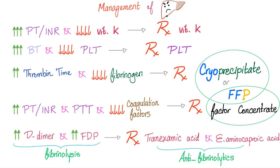How do we manage liver disease? If PT-INR is prolonged and vitamin K is low, give vitamin K. If bleeding time is prolonged and platelet count is low, give platelets. If thrombin time is prolonged — indicating a problem in the common pathway — and fibrinogen is very low, it may be time to give fibrinogen.